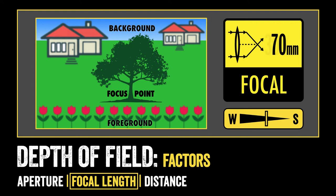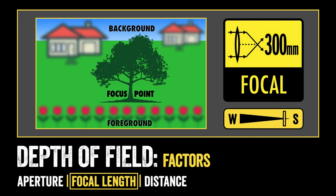As I continue to increase the focal length of the lens — let's say to a telephoto like 300mm — I continue to make a much more shallow depth of field. So my depth of field continues to decrease as I increase the millimeter of my lens. Now the tree is probably the only thing in focus, the background is much more blurry, and so is the foreground. Remember, as we increase the focal length of the lens, we will decrease our depth of field — going from a wide depth of field to a shallow depth of field.